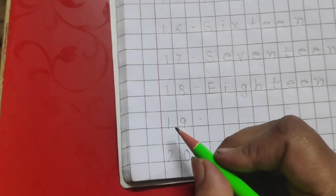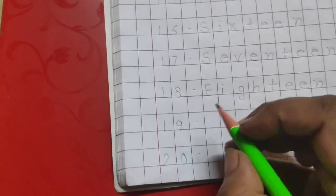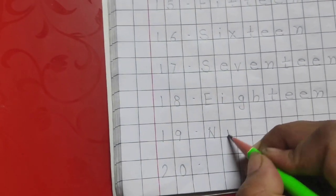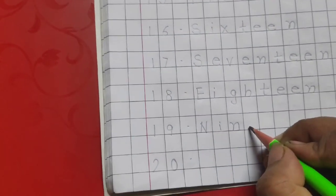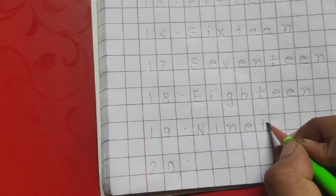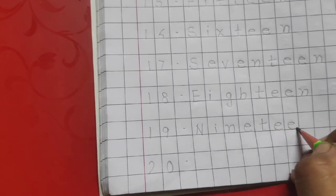The number name for the next number 19 is N-I-N-E-T-E-E-N.